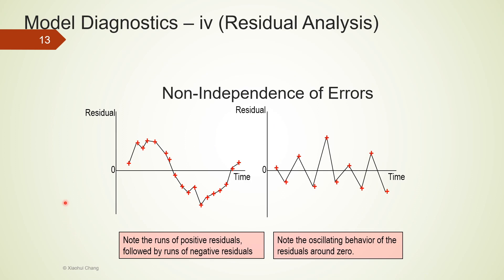These are some examples when the independence assumption is not valid. For example, in the first one, the residuals are not independent of each other because there are runs of positive residuals followed by runs of negative residuals. On the second plot, we can also see that there is some kind of oscillating behavior of the residuals around zero. So it is always a positive residual followed by a negative residual. Positive, negative, positive, negative.